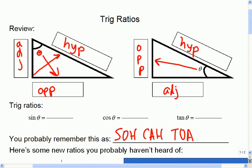Where we said sine is the opposite over the hypotenuse, and cosine is the adjacent over the hypotenuse, and the opposite over the adjacent.